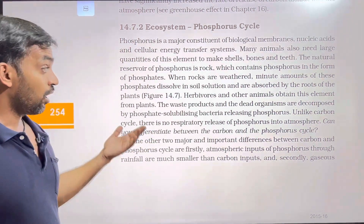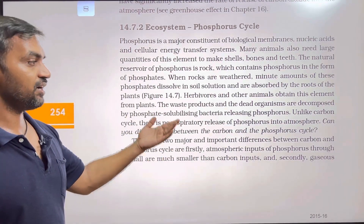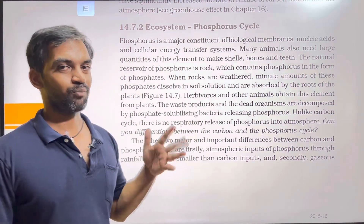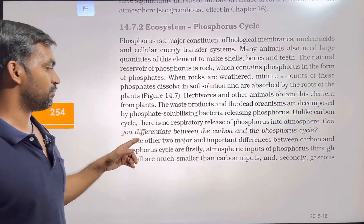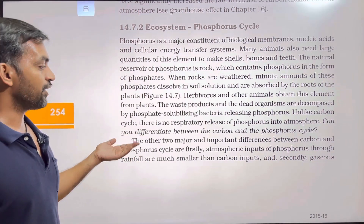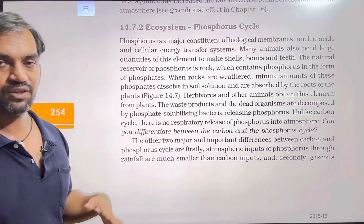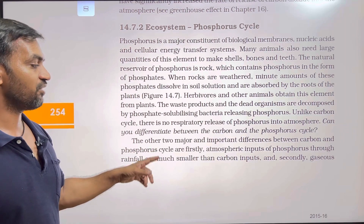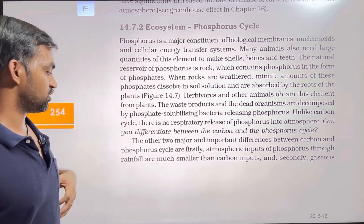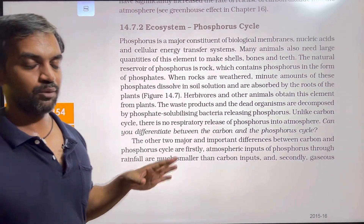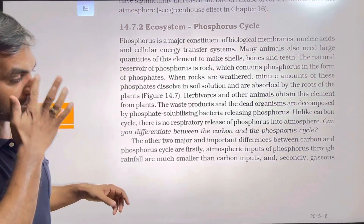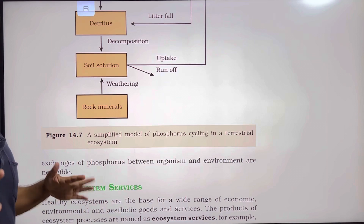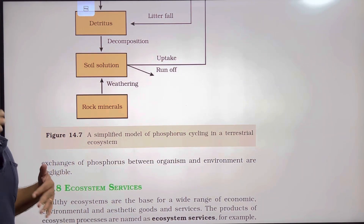Unlike the carbon cycle, there is no respiratory release of phosphorus into the atmosphere. Two major differences between carbon and phosphorus cycles are: first, the atmospheric input of phosphorus through rainfall is much smaller than for carbon; and second, the gaseous exchange of phosphorus between organisms and the environment is negligible, unlike carbon where respiration releases carbon dioxide.